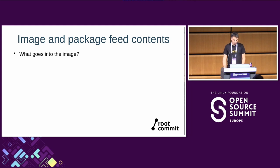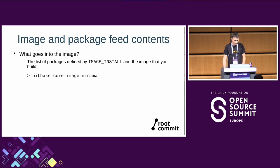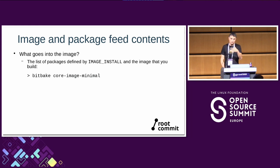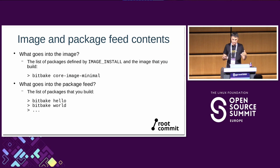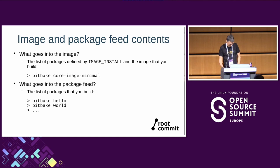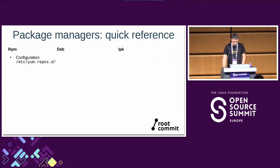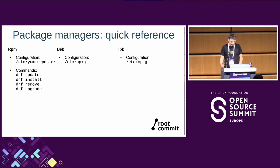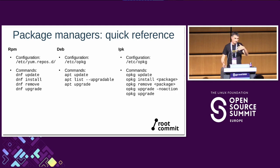There's an important difference between image contents and package feed contents. What goes into the image is what you add to IMAGE_INSTALL. But you can have a different package feed with more packages by running bitbake on whatever packages you want to build — they get added to the feed. You can run 'bitbake hello' or 'bitbake world', where 'bitbake world' generates all packages defined by the recipes you have. A quick reference shows commands to update the package list from the repository: dnf update, apt update, or opkg update; then commands to install, remove, or apply updates.